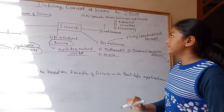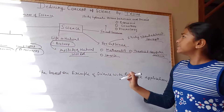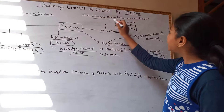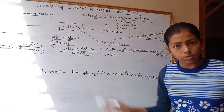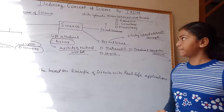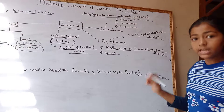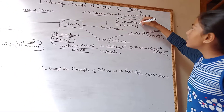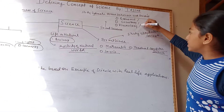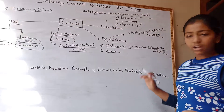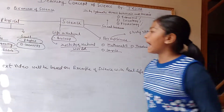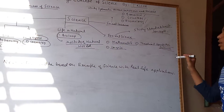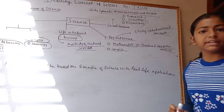Social Science. In Social Science, we study systematic human behaviour and the whole society. Here we study subjects like Economics and Psychology. These were the branches of science we have studied.